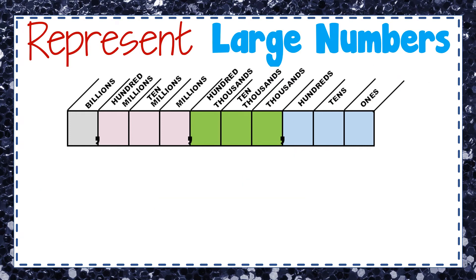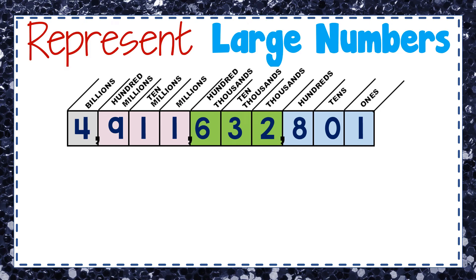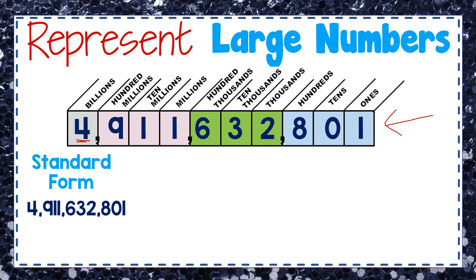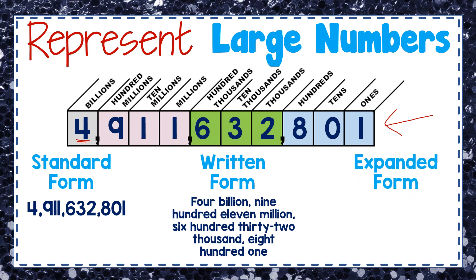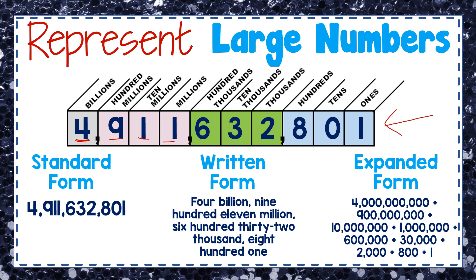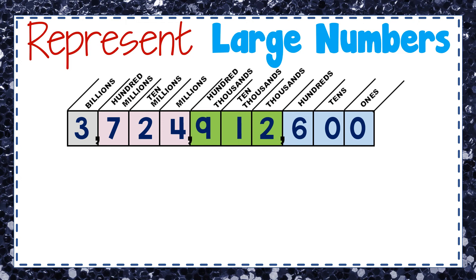Let's look at a number that goes up to the billions place. Here I have a number in the place value chart extending to the billions place. In standard form it's represented the same way as shown in the chart. Here it is in written form — words — and in expanded form, where every digit is expanded to represent its value. This number is read: four billion, nine hundred eleven million, six hundred thirty-two thousand, eight hundred one. Be very careful with zeros in such large numbers and don't rush.